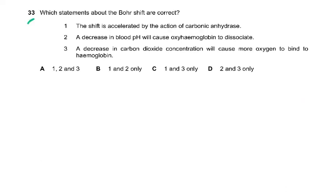Question number 33. Which statements about the Bohr shift are correct? The Bohr shift is when there's more CO2, it shifts to the right. The shift is accelerated by the action of carbonic anhydrase. A decrease in blood pH will cause oxyhemoglobin to dissociate. A decrease in carbon dioxide concentration will cause more oxygen to bind to hemoglobin. The answer is A — all three are correct: 1, 2 and 3. Please go and revise the Bohr shift to know why this is correct.